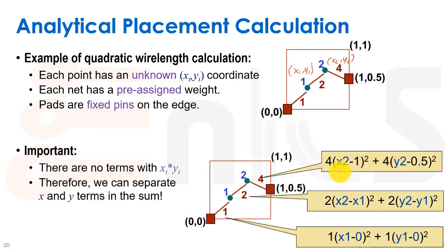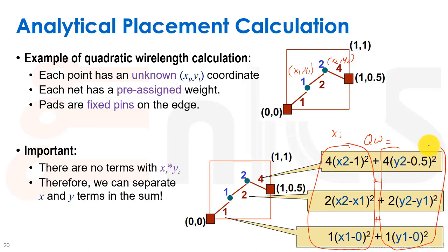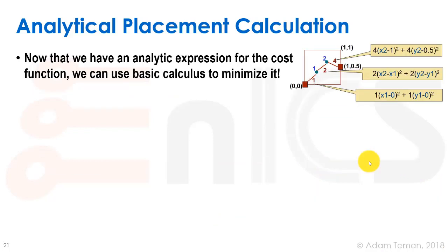There are important things to notice in the quadratic wire length sum. If we look at the terms, some contain only the xi's and others contain only the yi's — but there are no expressions with both xi and yi together. This is really important because it enables us to separate the equation and independently differentiate the x part and the y part to find the optimal solution. That's exactly why we use this quadratic wire length expression.